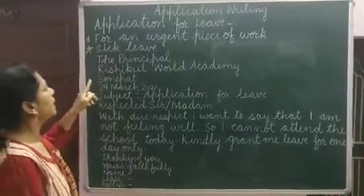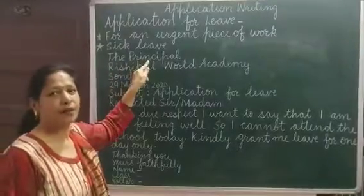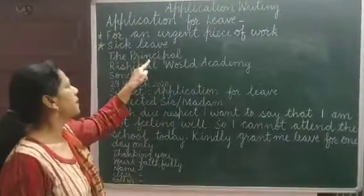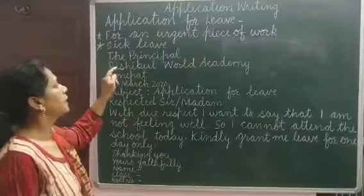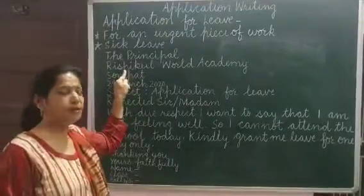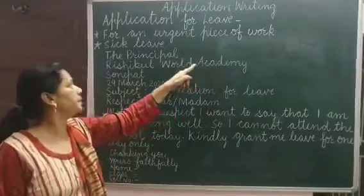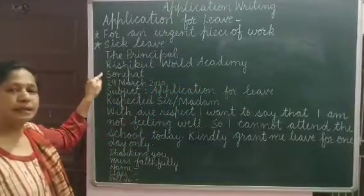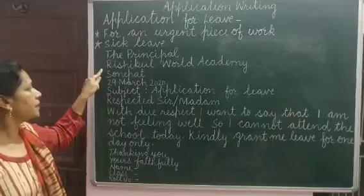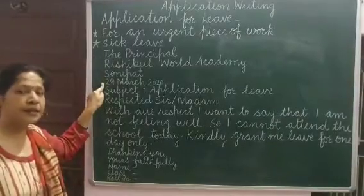First of all, you have to write the name of the head of the institution, like the principal. After that, you will write the name of the institution — Rishikul Word Academy — and then the name of the city.